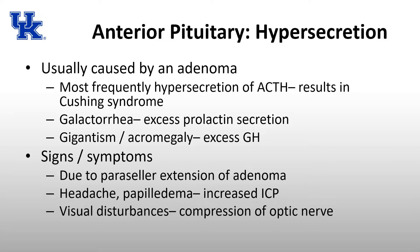Hypersecretion from the anterior pituitary is usually caused by an adenoma, and the signs and symptoms will really depend on what hormone is being secreted. If it's ACTH, you're going to see Cushing syndrome. If it's prolactin, you'll see galactorrhea. If it's growth hormone, you'll see gigantism or acromegaly. Signs and symptoms that aren't hormone-specific can be due to parasellar extension of the adenoma, which can block CSF flow causing increased ICP with headache and papilledema, or compress the optic nerve causing visual field disturbances.